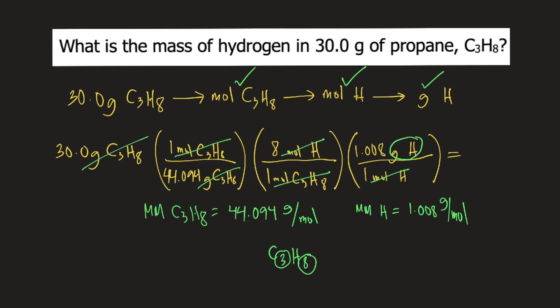Now that we reach the final unit, we can solve for the grams of hydrogen. Just plug everything into your calculator, and the answer is equal to approximately 5.49 grams of hydrogen. And this is the answer to the question.